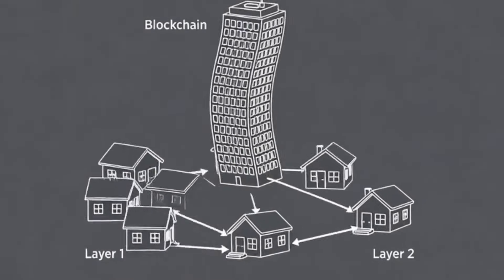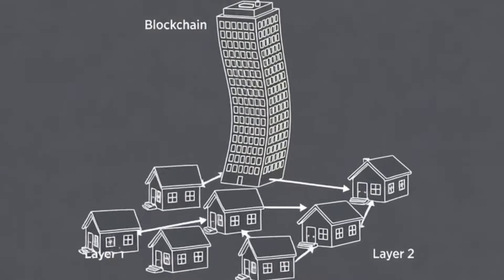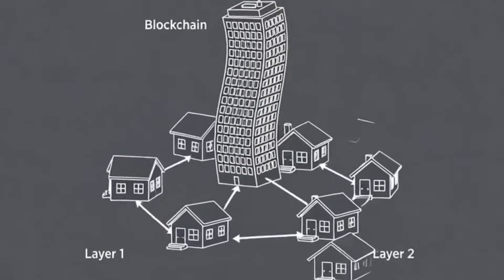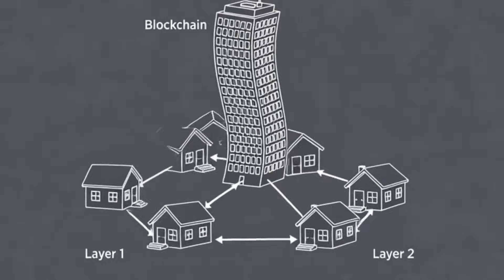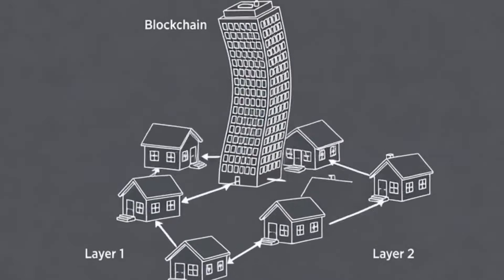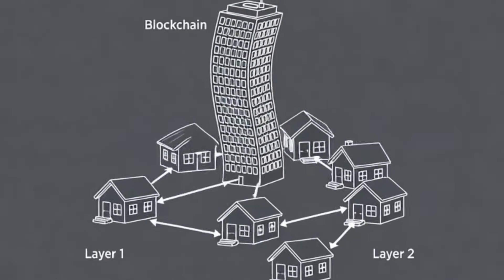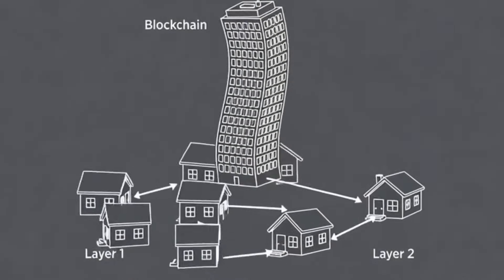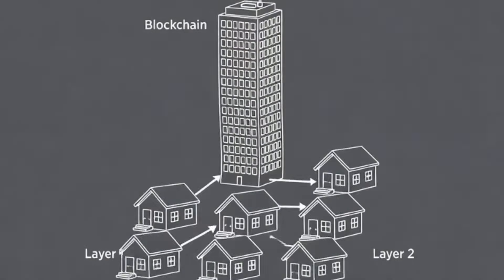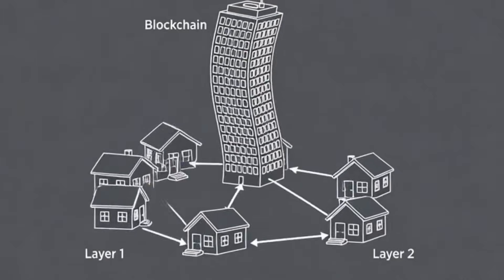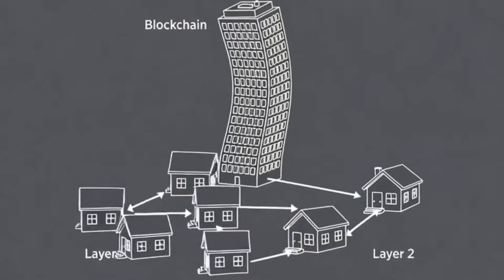Imagine you want to build a skyscraper. The standard way in blockchain right now is like starting with a two-story house. When you need more space, you just build another small house on top of it, and another on top of that. Each house is a different layer, and getting from the ground floor to the top floor requires going through multiple separate structures. It's complicated, slow, and things can get lost or broken along the way. This is the challenge many blockchains face with their layer 1 and layer 2 architectures — trying to solve a fundamental design problem by adding more complexity on top.